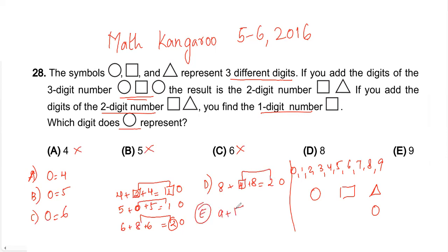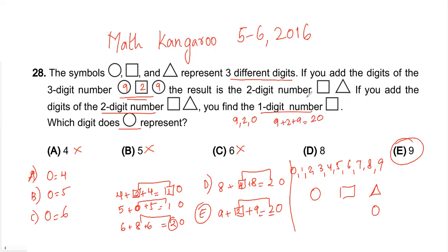For option E, the circle is nine. Nine plus square plus nine: eighteen plus two gives twenty, and two matches two — so the square is two and it matches. The digits are: circle equals nine, square equals two, triangle equals zero. Checking: nine plus two plus nine equals twenty, which is the two-digit number square-triangle, and two plus zero equals two, which is the square. All conditions are met.